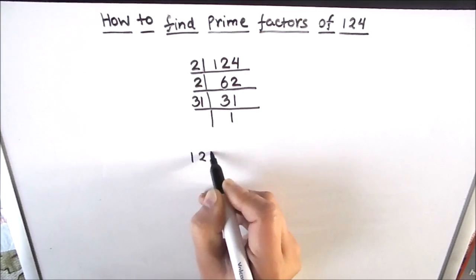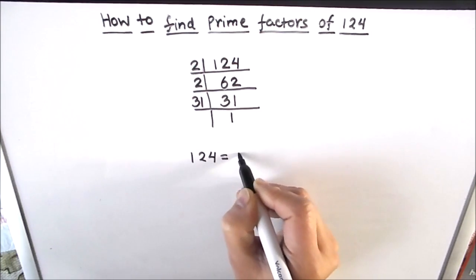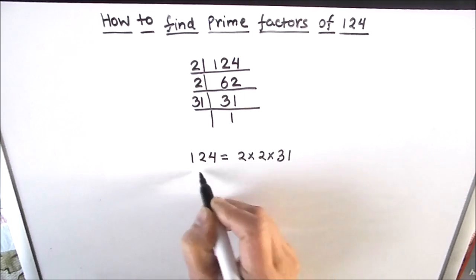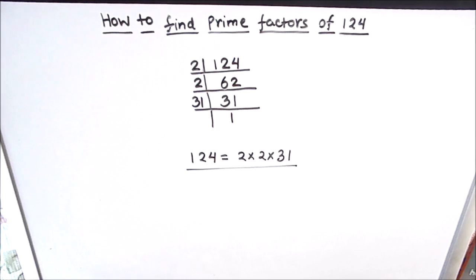So the prime factors of 124 will be 2 times 2 times 31. These are the prime factors of 124. So this is how by using the prime factorization method we can find the factors of any number.